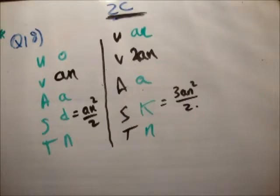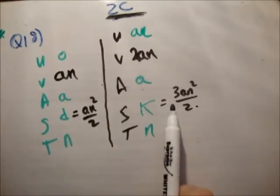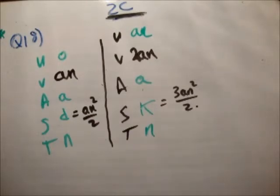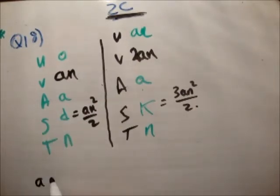So we're asked to show that k is equal to 3 times d. k is equal to 3 times d. Now look, we have here d in terms of a and n, and here we have k in terms of a and n. So what we should be able to do is show that we will be able to manipulate them. So first of all, get a in terms of everything else. So we'll say a is equal to 2d over n squared.